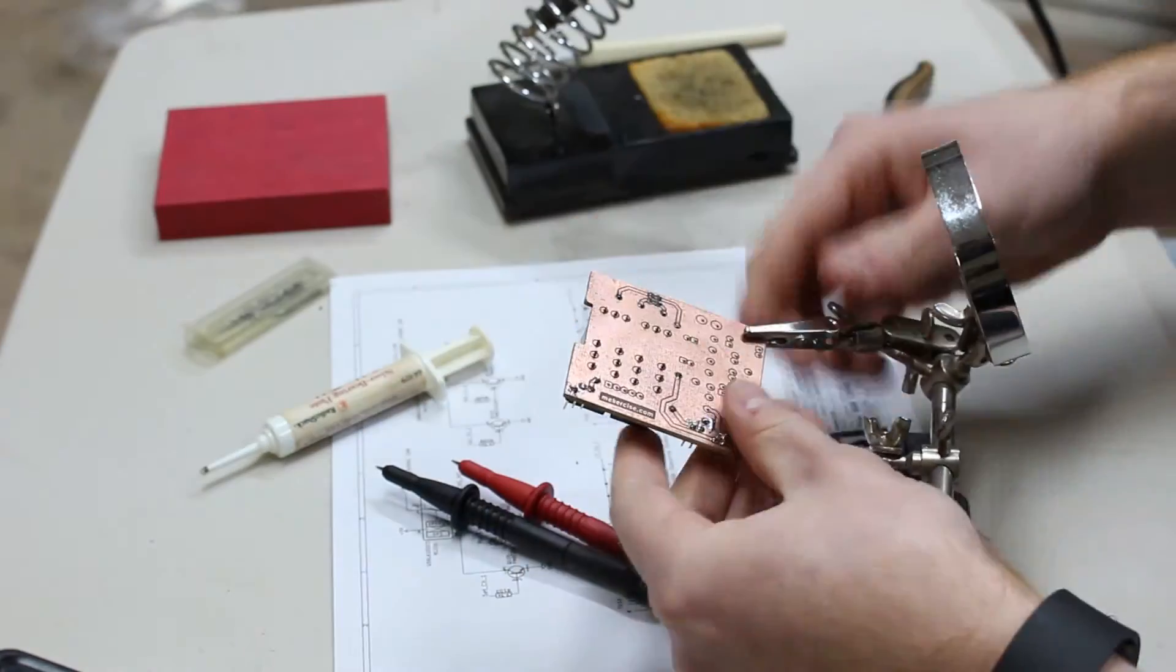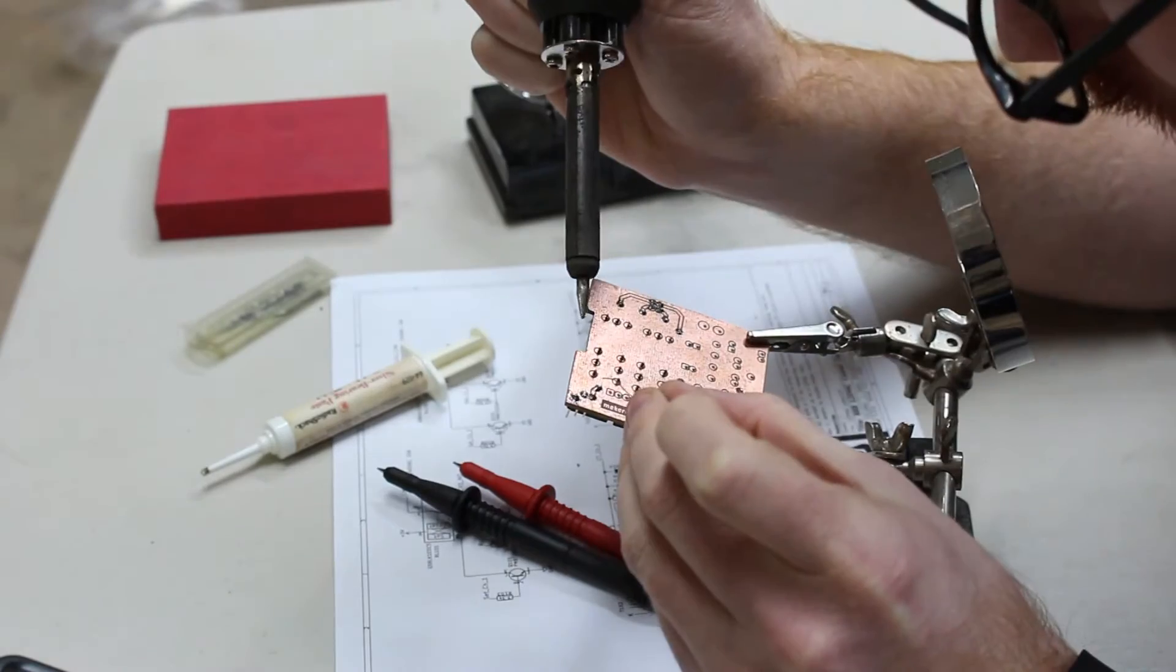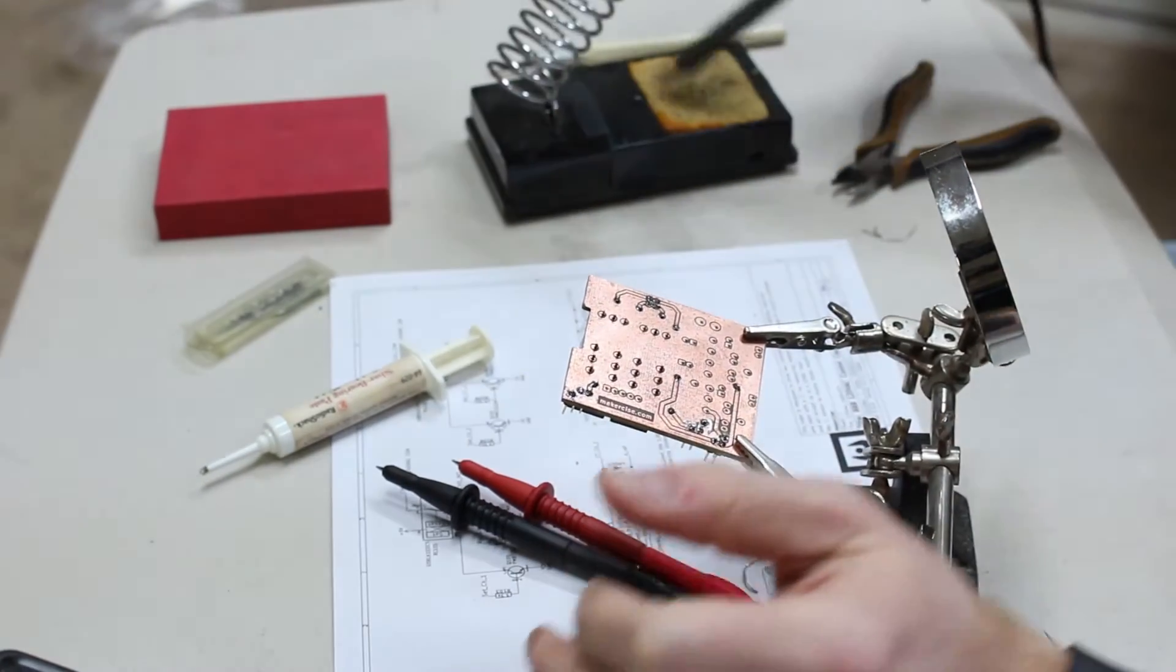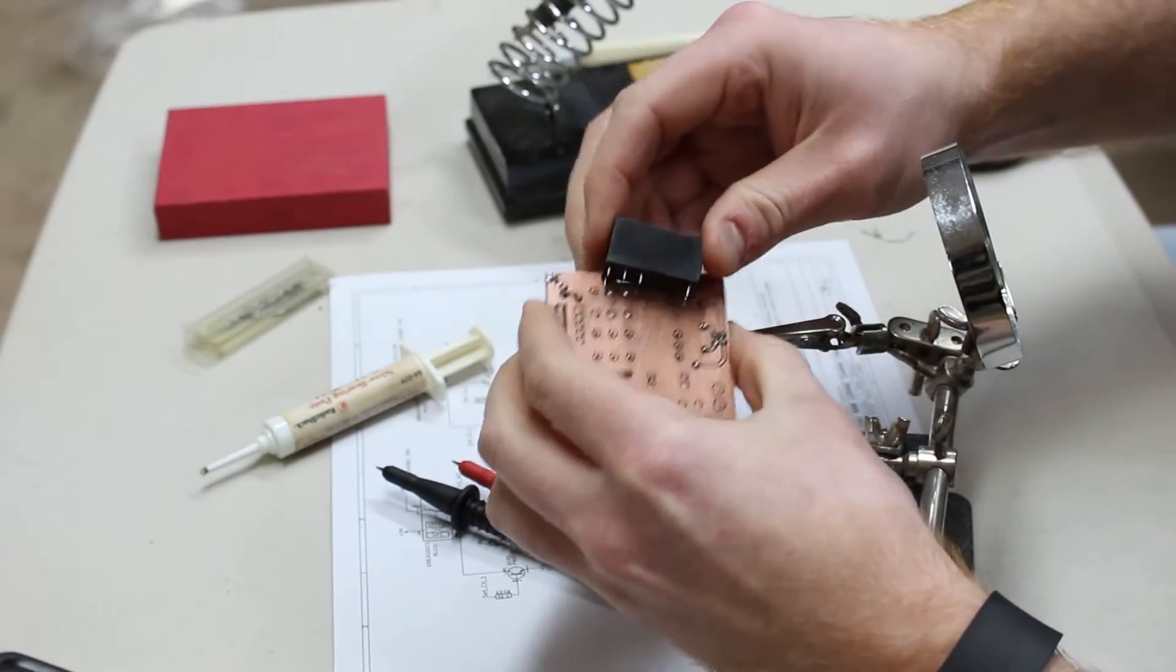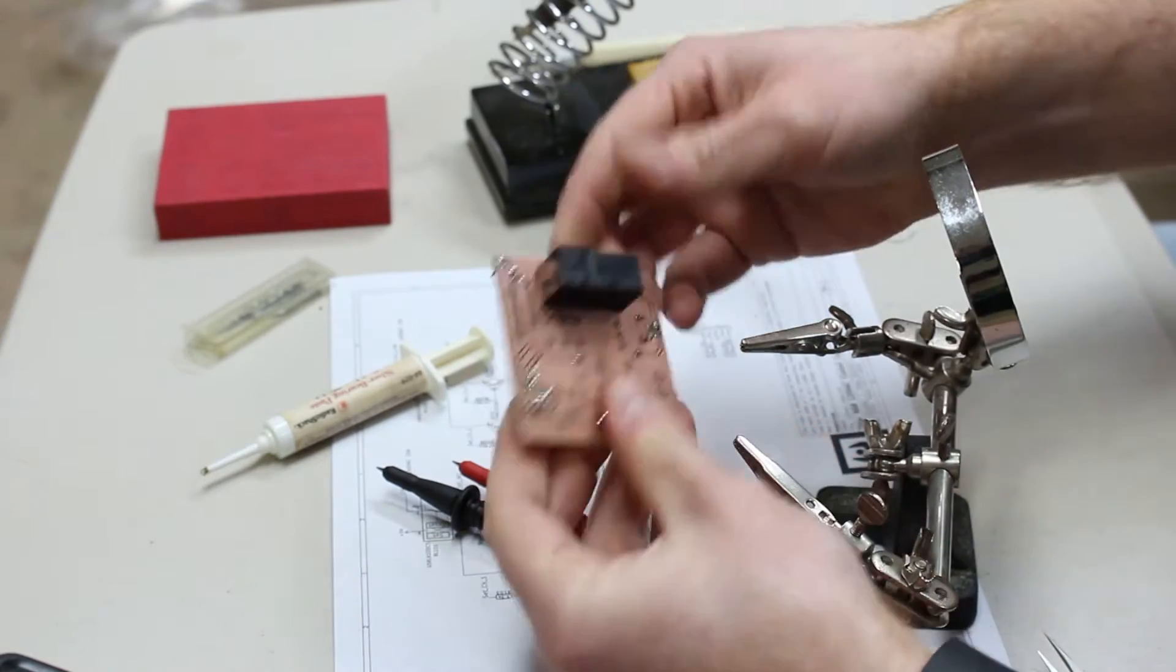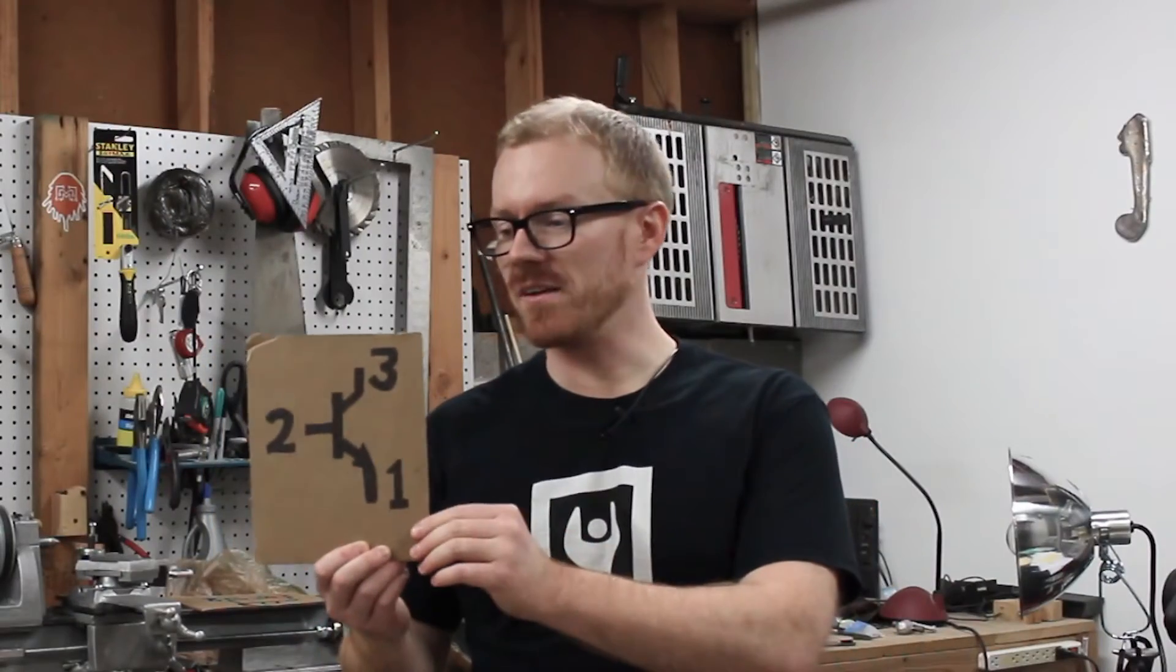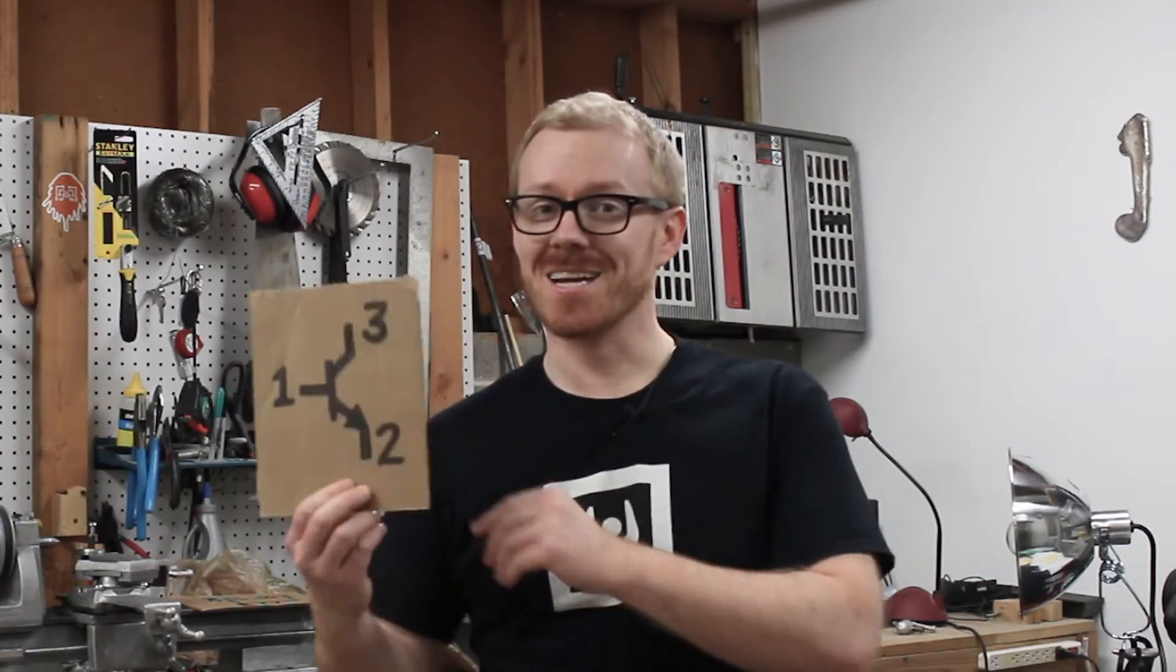Now this was a near miss. I just about soldered those components on the wrong side of the board. This was the first in a series of near misses and failures. When I created the part in KiCAD for the transistors, I actually swapped two of the pins.